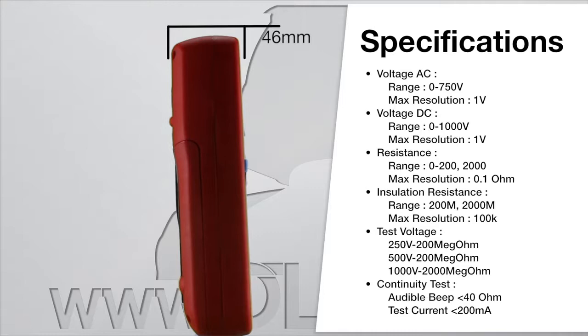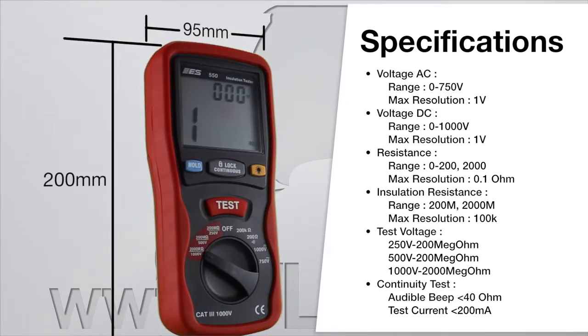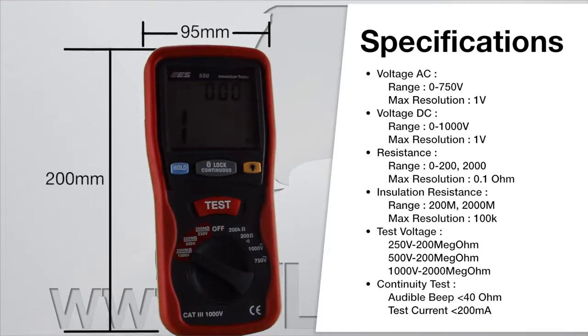The 550 Insulation Tester is auto-ranging and can measure up to 200 megaohms with a resolution of 1 kiloohm.